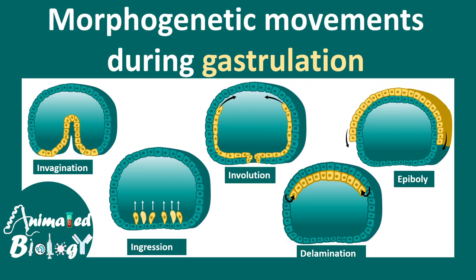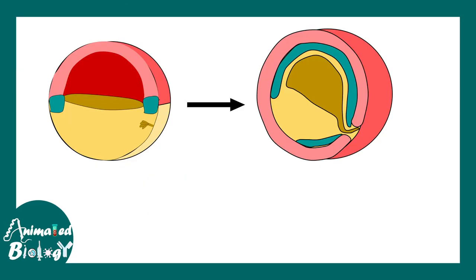These are common themes. If you want to learn details about these, click on the video in the i button. But in this video, we would try to appreciate where and when these basic morphogenetic movements happen during frog gastrulation. In short, this is how the frog gastrulation would look like.